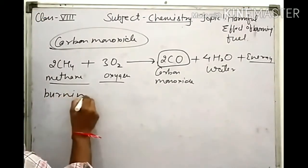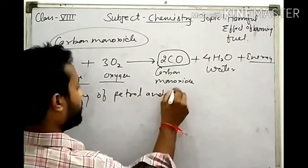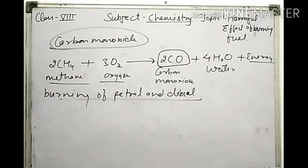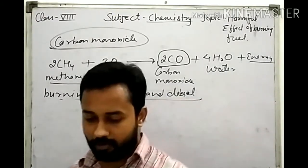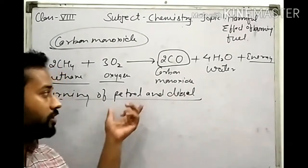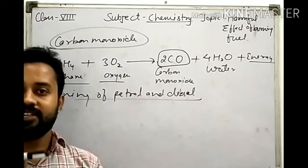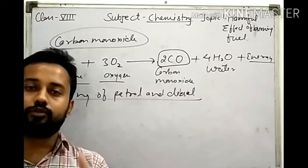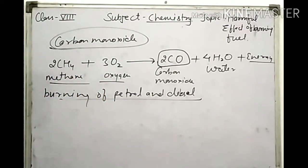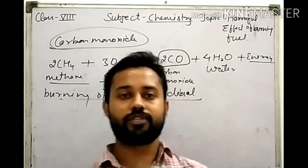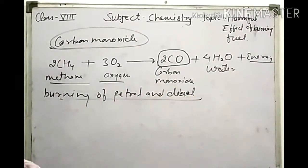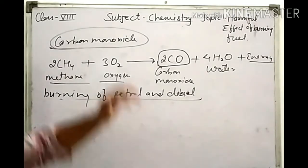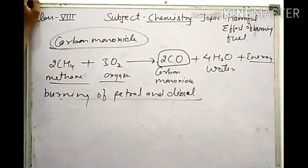Another example is the burning of petrol and diesel. When we burn petrol and diesel in automobiles as fuel, sulfur particles are burned. When we burn these fuels, harmful gases are released such as sulfur dioxide, nitrogen dioxide, and carbon dioxide. Sulfur dioxide is very suffocating and harmful for human beings — it creates pollution.